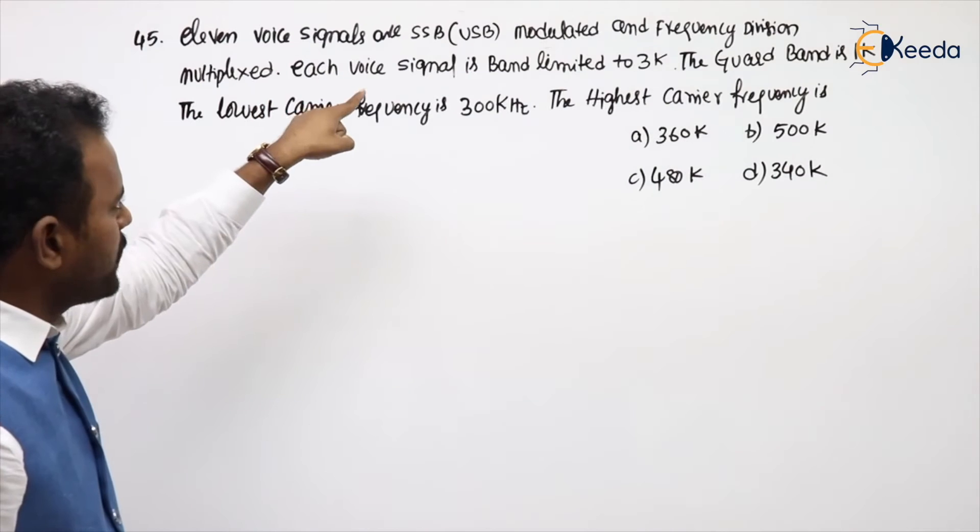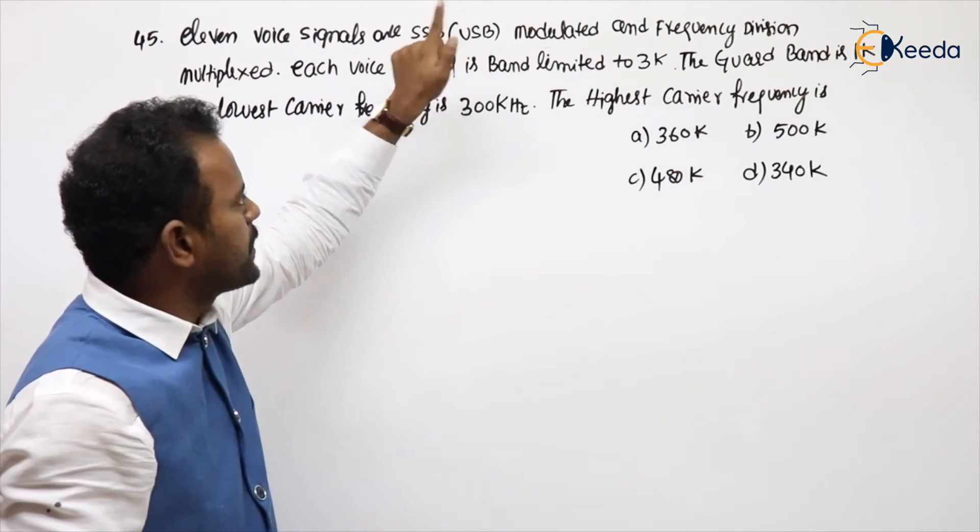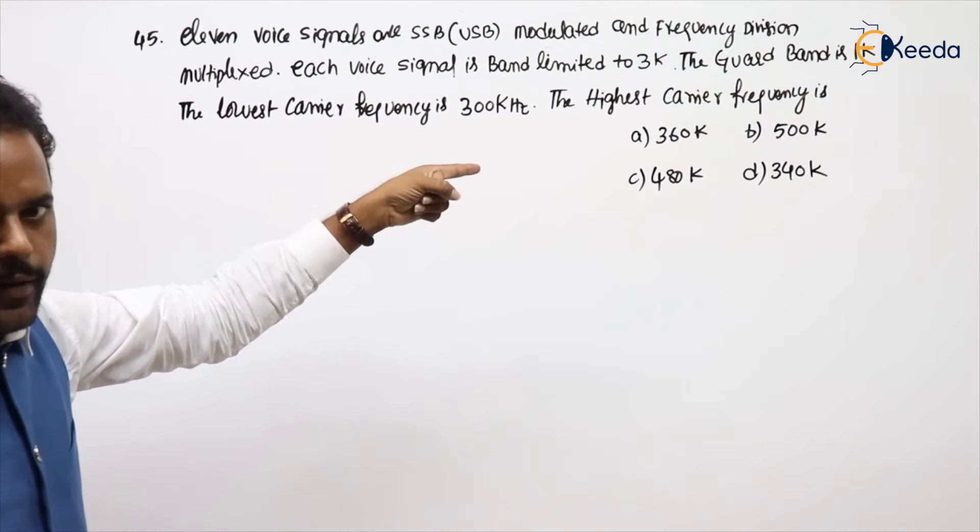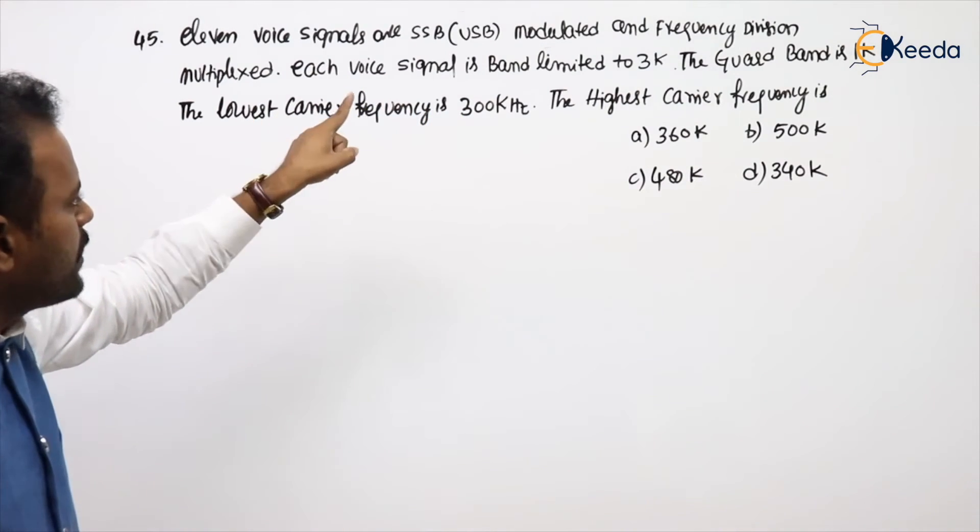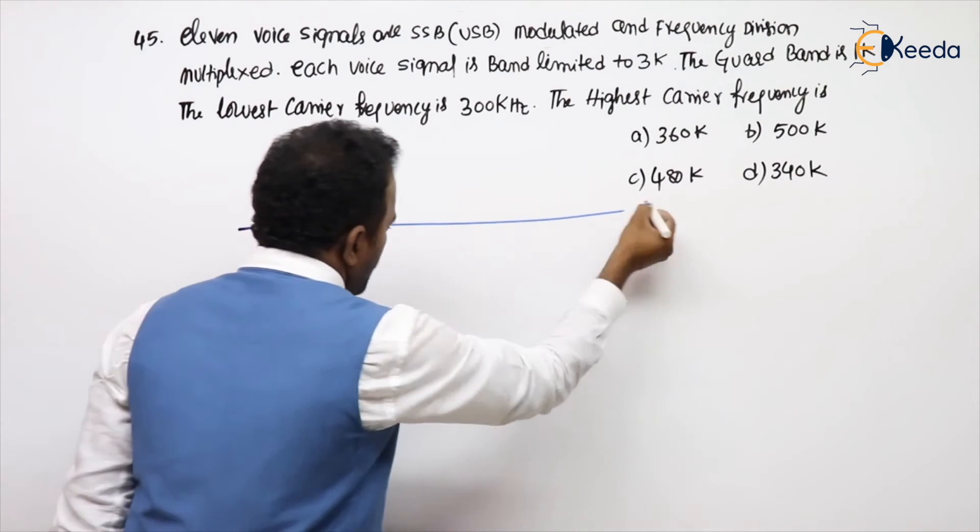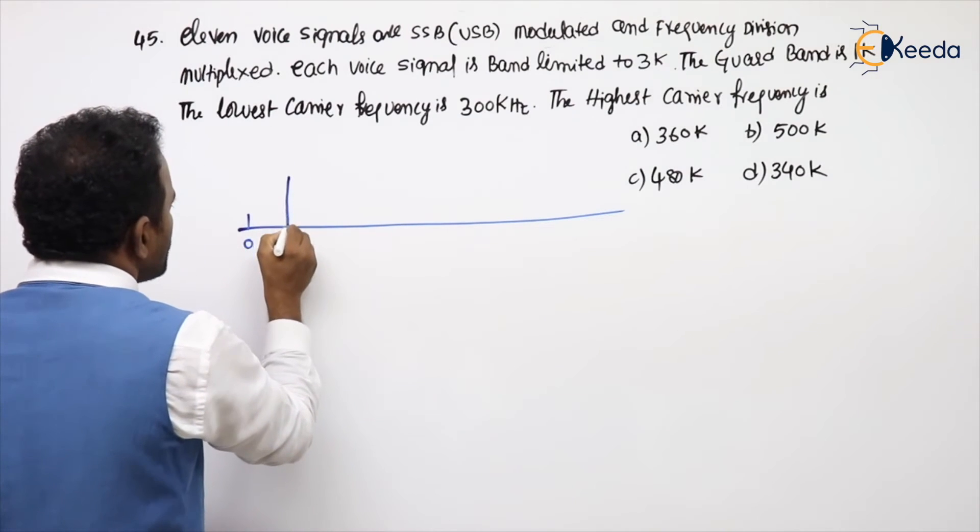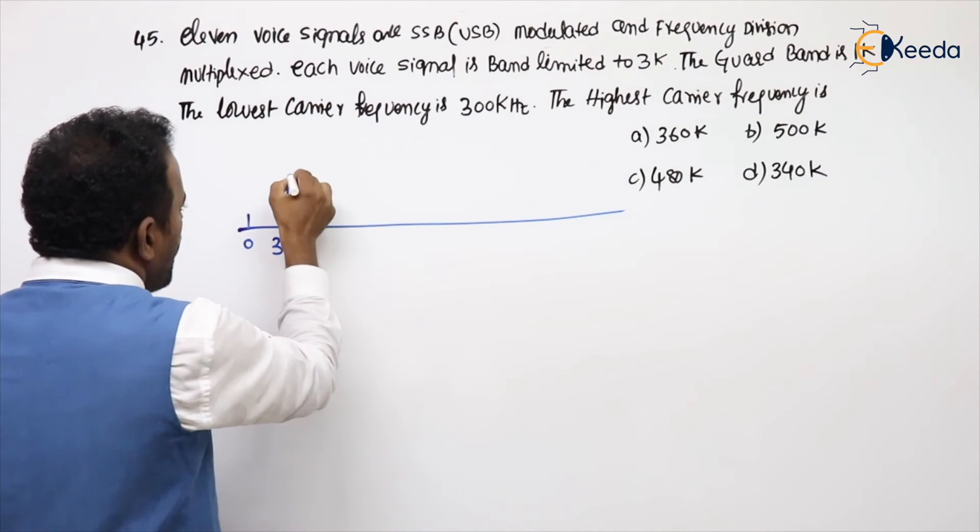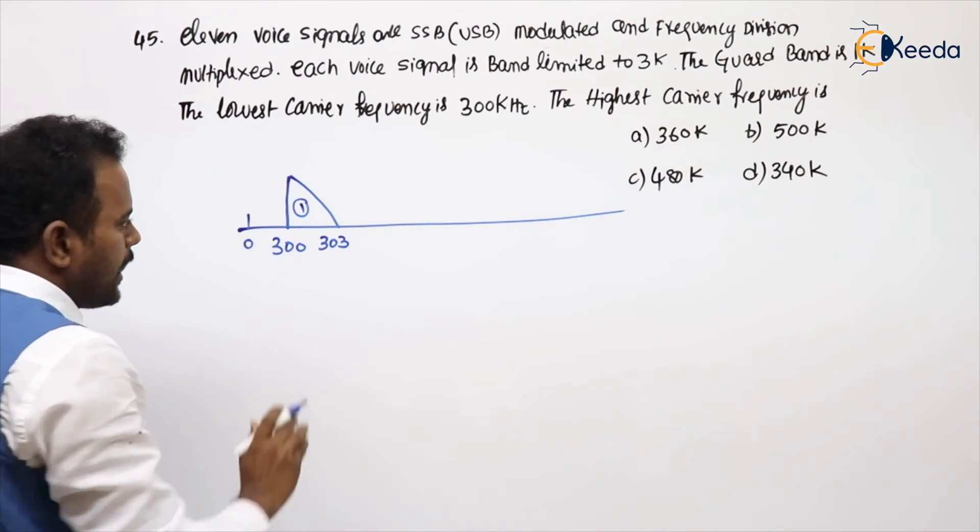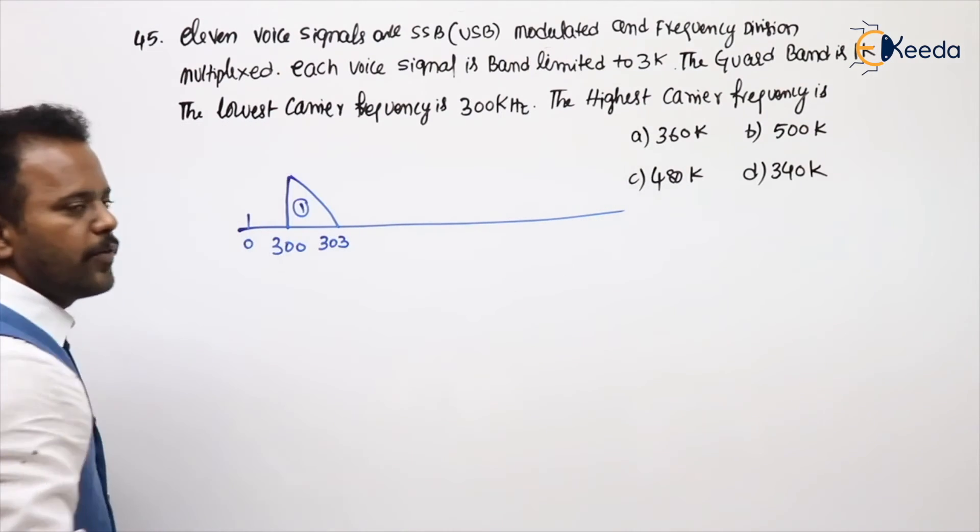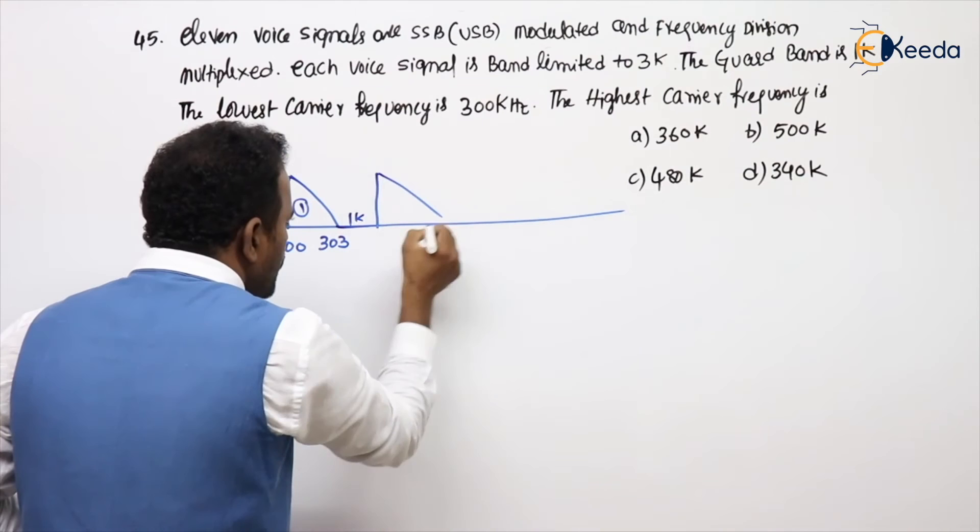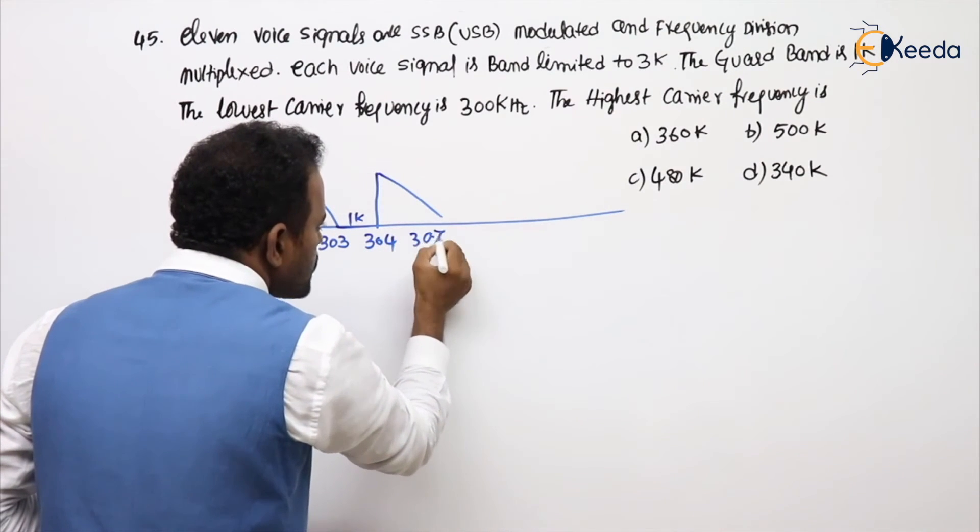11 voice signals are SSB, of course they are using USB. In SSB, it is modulation upper sideband, modulated and frequency division multiplexed. Each voice signal is band limited to 3K, guard band is 1K. The lowest carrier frequency is 300K. What is the highest carrier frequency? What he is doing, there are 11 voice signals, and the first one, first carrier frequency is 300. Are you getting it? And what is the message bandwidth? 3K, so 303. This is the first signal. Like he is done 11, what is the highest, last carrier frequency he is asking. Of course all are kilo only. And how much is the guard band left? 1K. What is the second channel carrier? 304 to 307. Are you getting it?